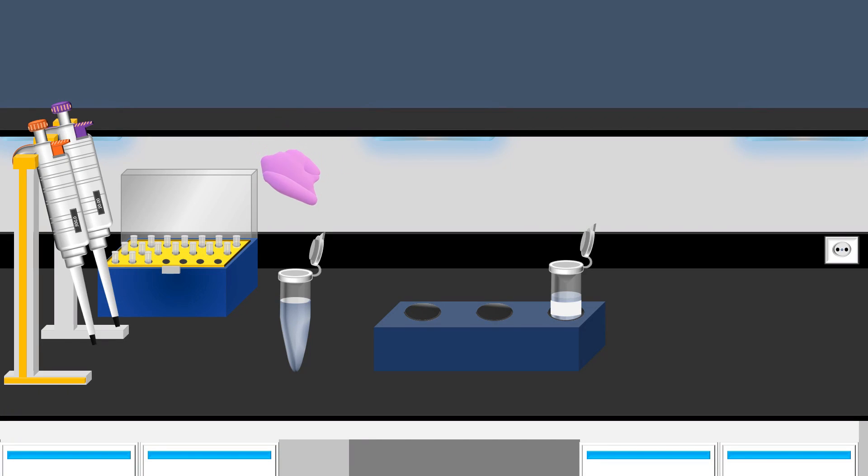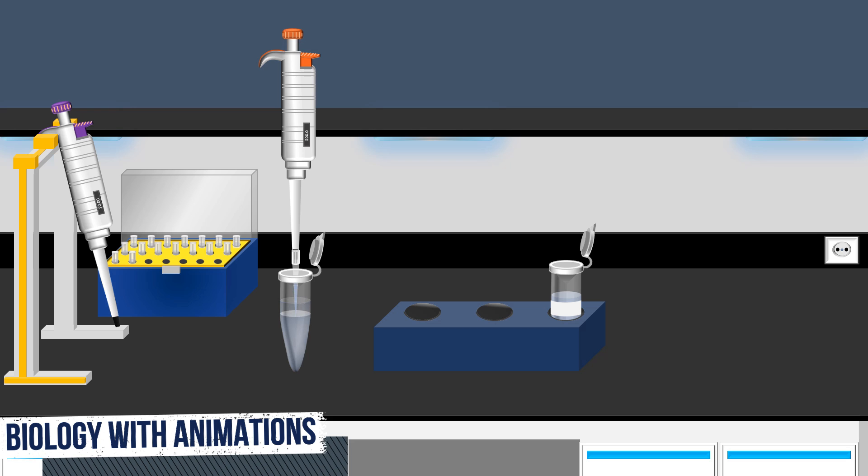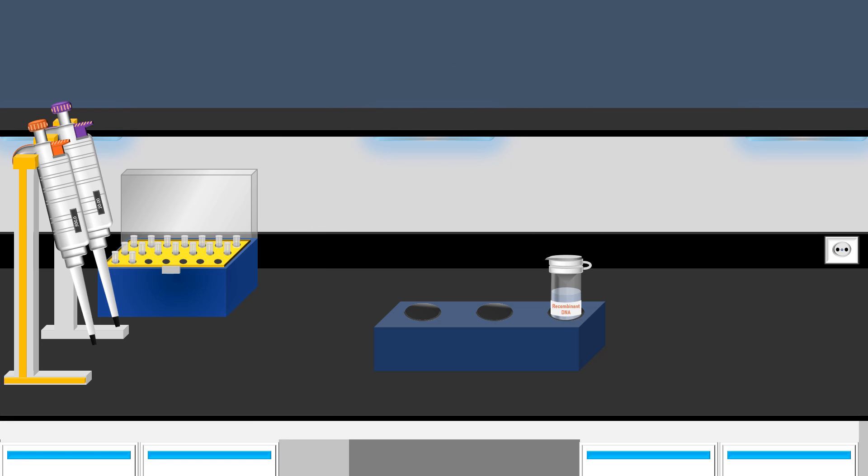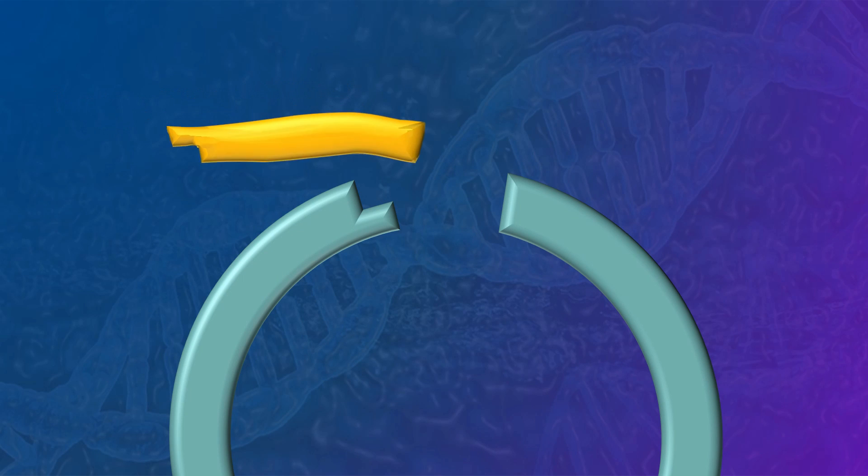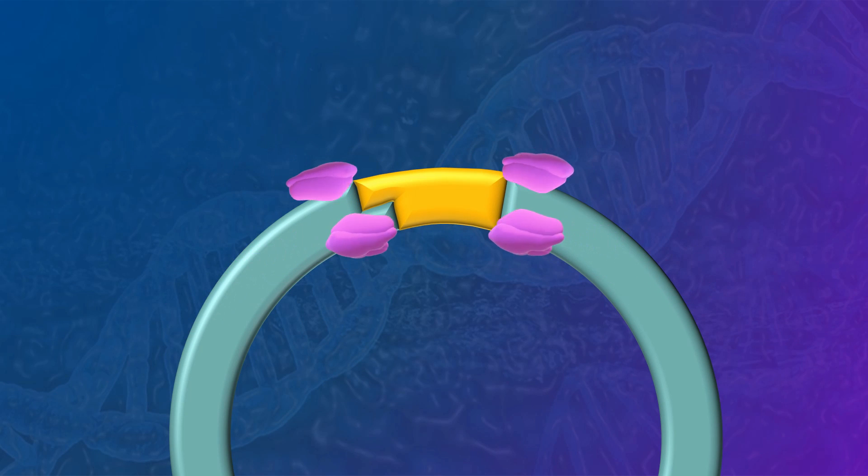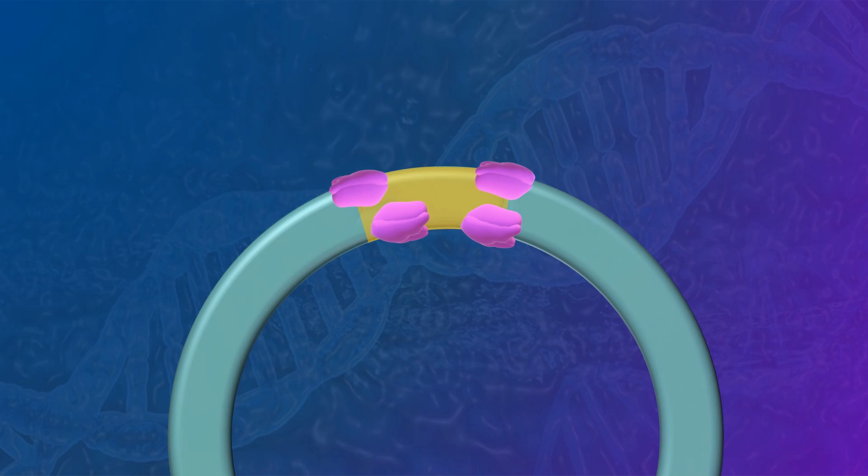For the recombinant process, the ligase enzyme solution is added to the sample containing the gene in the vector. The gene is integrated into the plasmid, and the insert DNA is physically attached to the plasmid backbone through the action of the ligase enzyme.